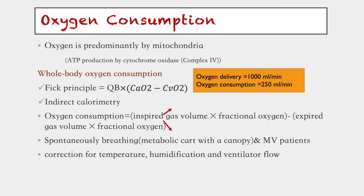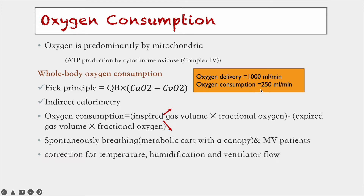The third modality is oxygen consumption. Oxygen is predominantly used by mitochondria; the main utilization is ATP production by complex 4 of the ETC, and it is also required to produce reactive oxygen species. Oxygen consumption can be calculated either as whole-body oxygen consumption or at the tissue level. Whole-body oxygen consumption uses a variant of the Fick principle, where total uptake is calculated by multiplying cardiac output by the arteriovenous difference of oxygen. Normally, oxygen delivery is 1000 ml per minute and consumption is around 250 ml per minute.